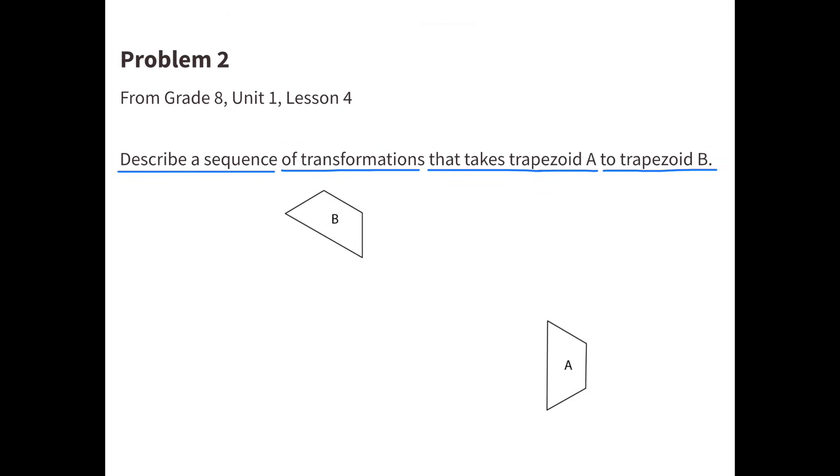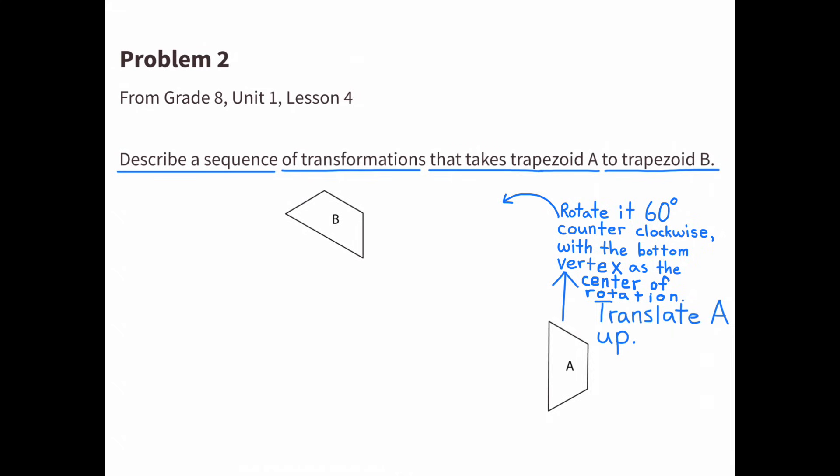2. Describe a sequence of transformations that takes trapezoid A to trapezoid B. The first move in the sequence, trapezoid A translates up. In the next move of the sequence, it rotates 60 degrees counterclockwise with the bottom vertex as the center of rotation. The last move is figure A translates left.